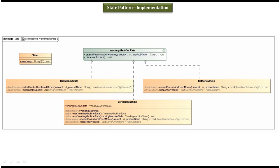This is the class diagram of the scenario we just discussed. Here you can see VendingMachineState — it is an interface. It has two abstract methods: the first method is selectProductAndInsertMoney, where you pass the money and product name, and the second method is dispenseProduct. This interface is implemented by three concrete classes: the first is HasMoneyState, the second is NoMoneyState, and the third is VendingMachine. The vending machine has two states: NoMoneyState and HasMoneyState.